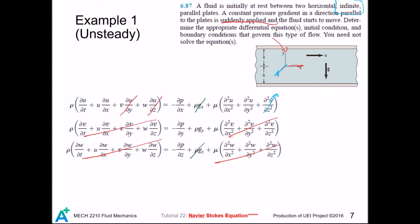Next, we apply the continuity equation. In Cartesian coordinates, it is given by the standard form. There is no flow in the y and z direction, which gives the requirement that u does not vary with x, so this term cancels out. We conclude our simplified Navier-Stokes equation.